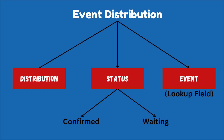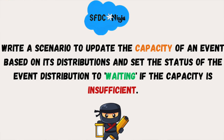Now let's understand the requirement. In today's scenario, whenever a new Event Distribution record is created, we need to decrease the count of Event Capacity on the parent Event record. And if the Event Capacity reaches 0, then we should allow the new Event Distribution record to be created, but the status of that new record will be Waiting.